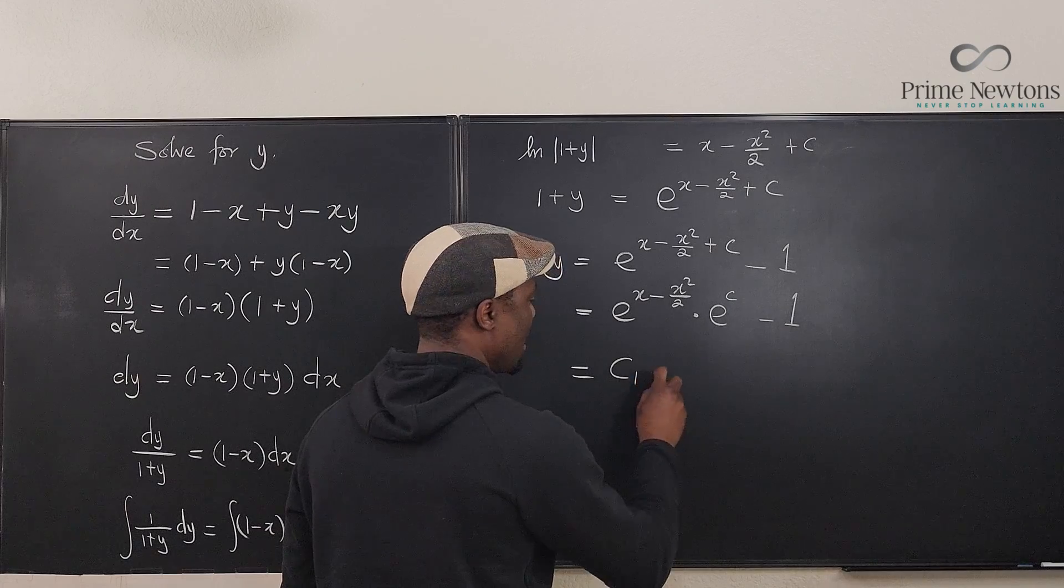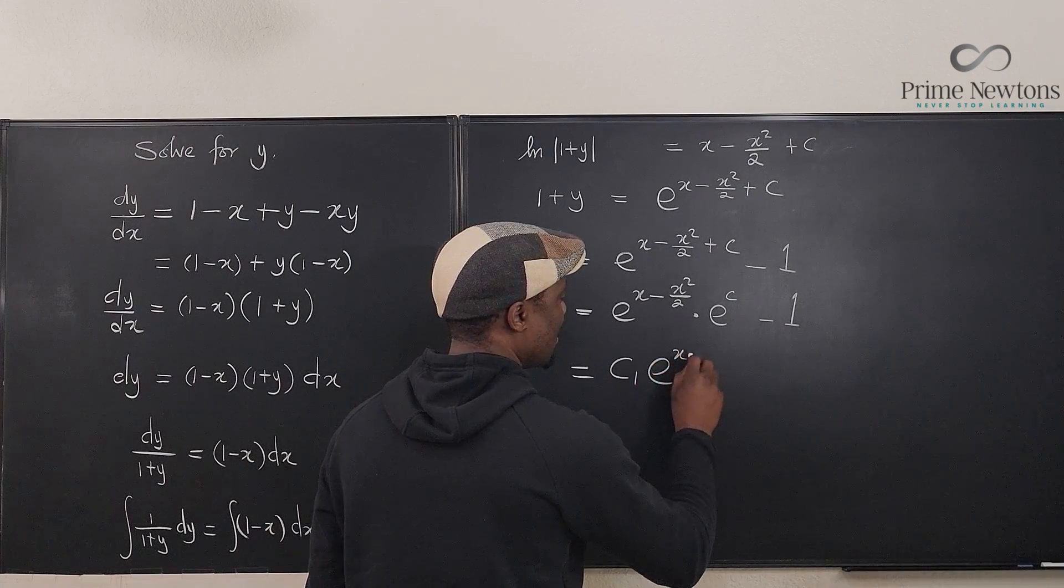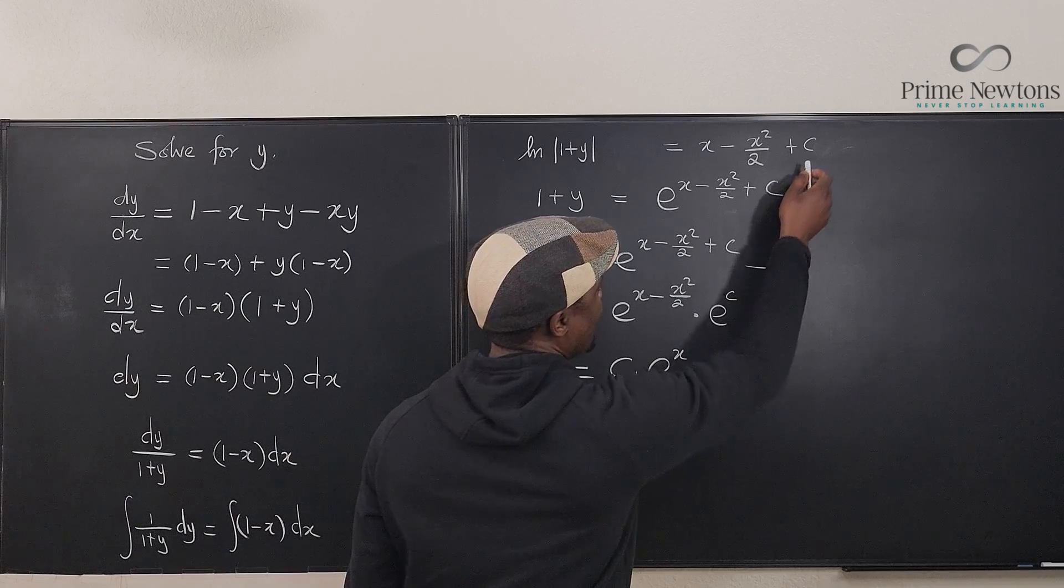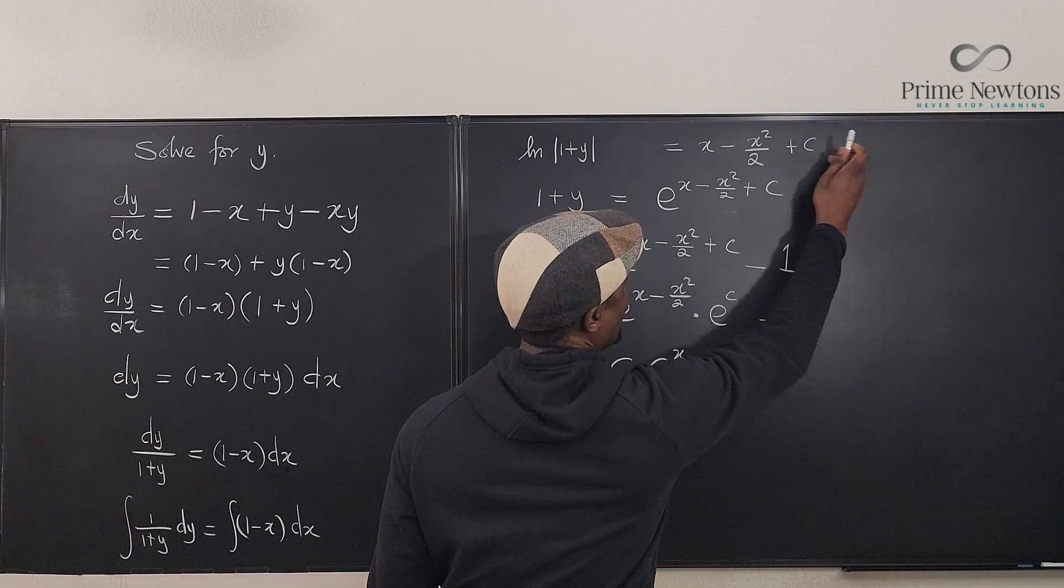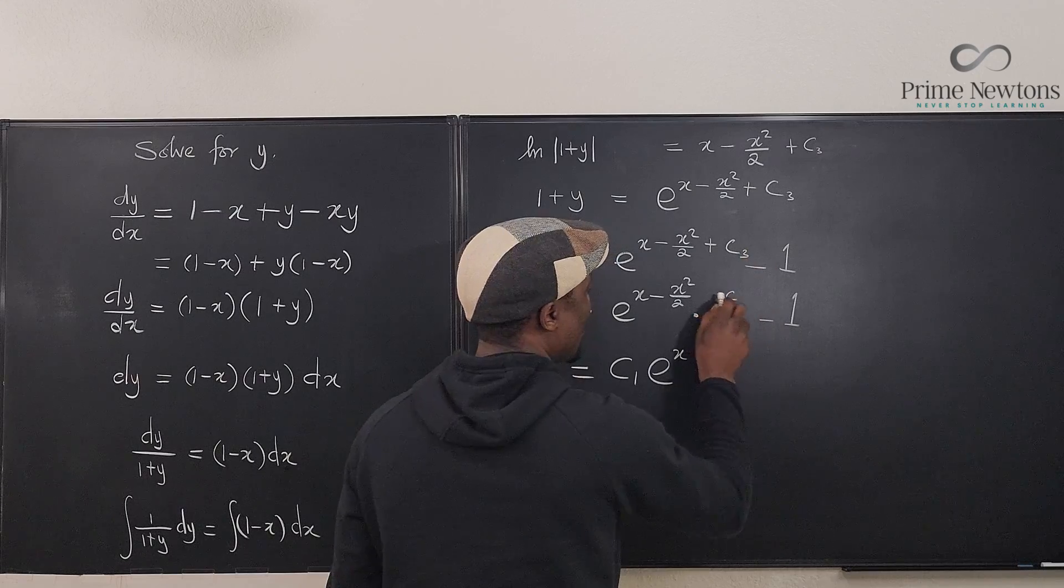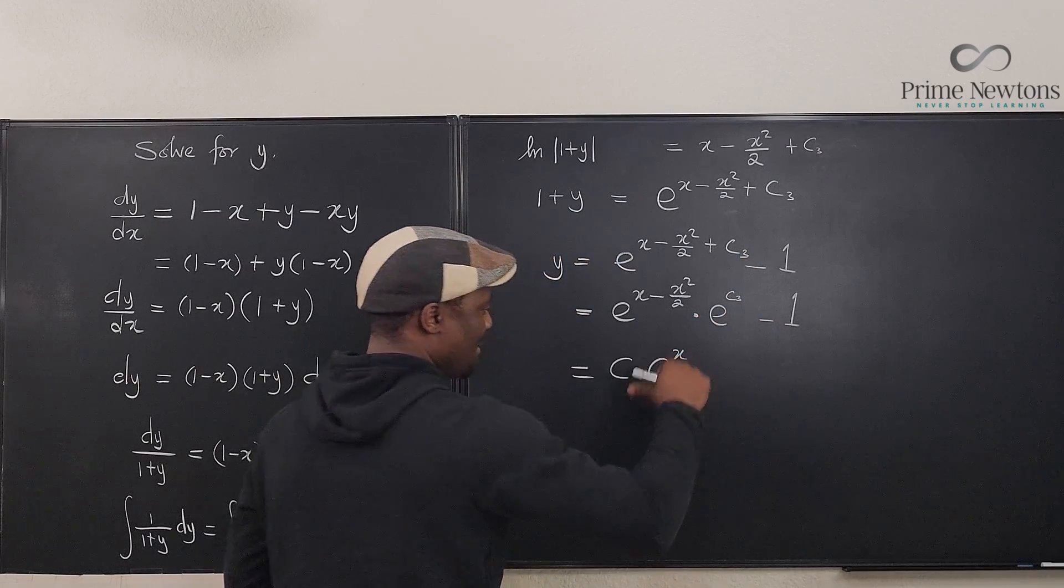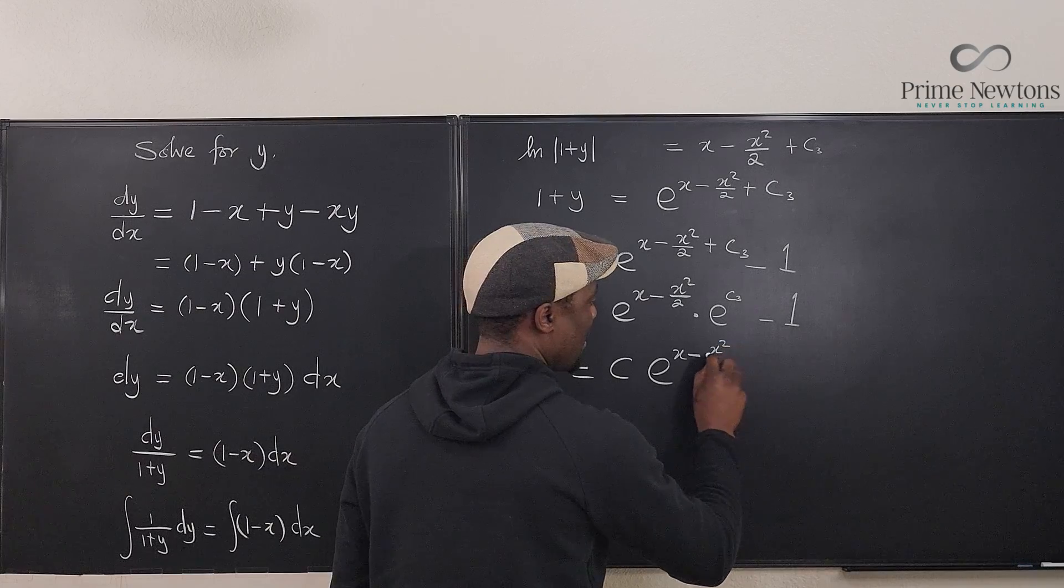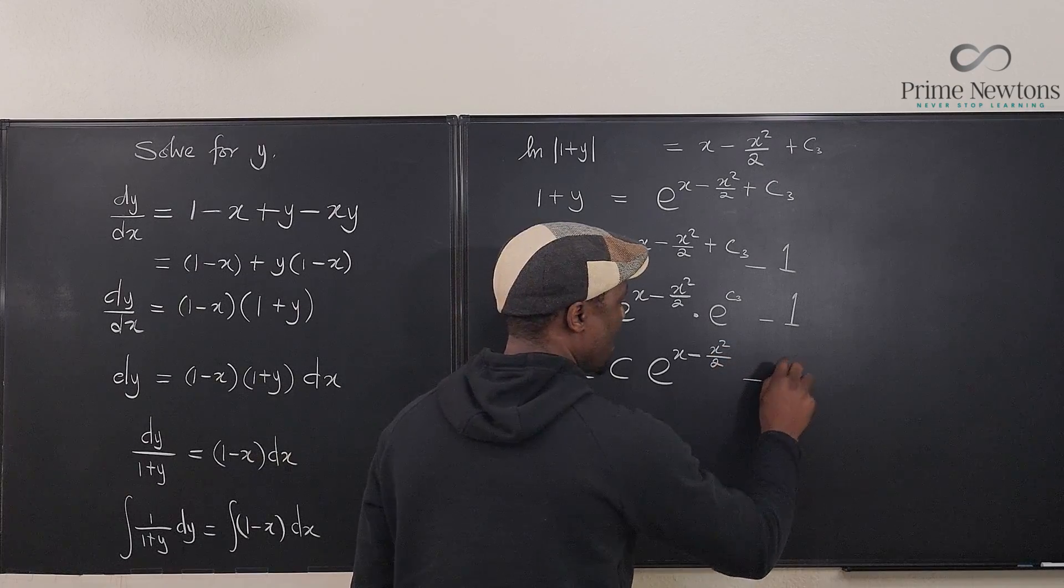I just say this is c1 times e to the (x minus x squared over 2) minus 1. Maybe I should have called this c3, because this was c1, c2, so call this c3, and then call it c. So y equals c times e to the (x minus x squared over 2) minus 1.